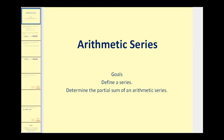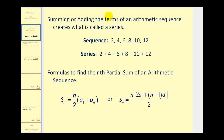Welcome to a video on arithmetic series. The goals of this video are to define a series and also to determine the partial sum of an arithmetic series. The summing or adding of the terms in an arithmetic sequence creates what is called a series. So a sequence is a list of terms and a series is a sum of terms. These are the formulas that we can use to find the nth partial sum of an arithmetic sequence.